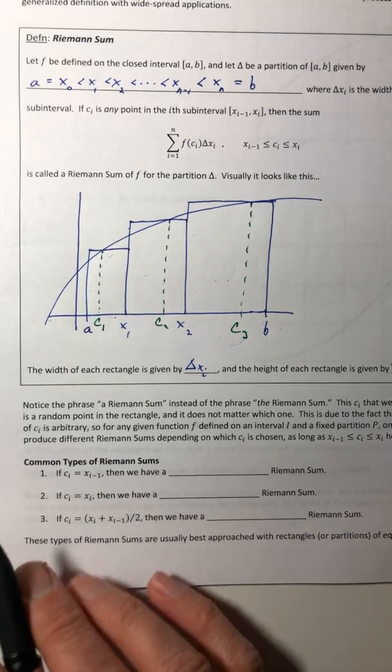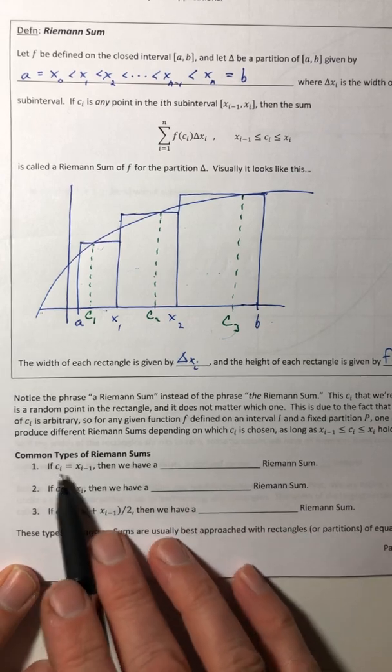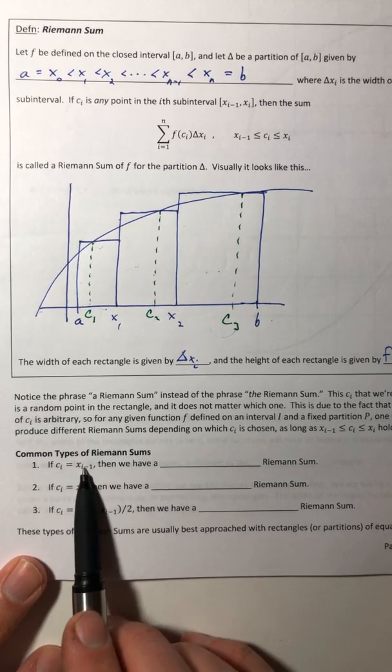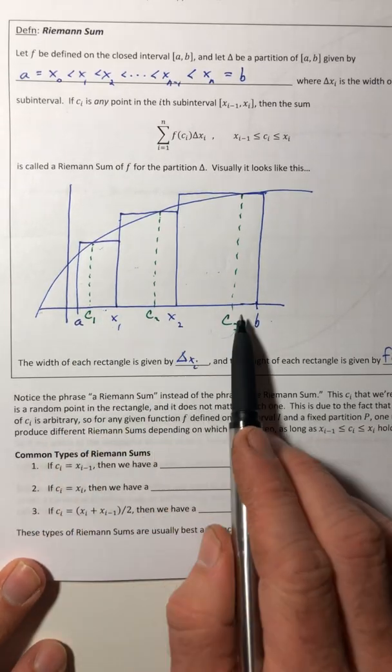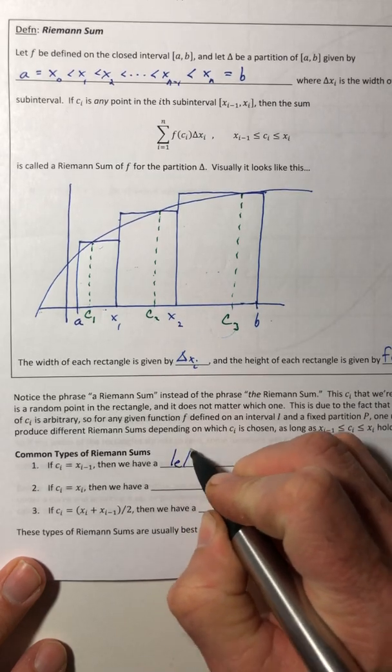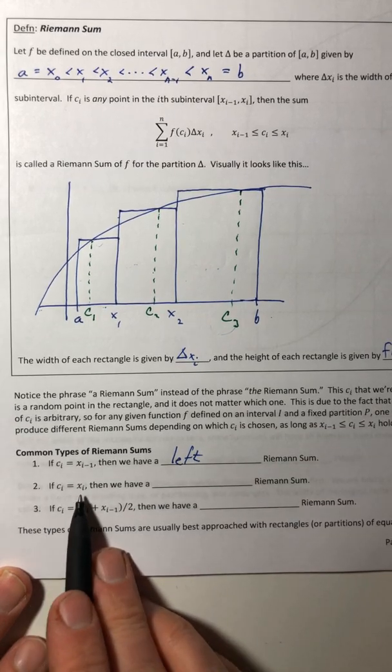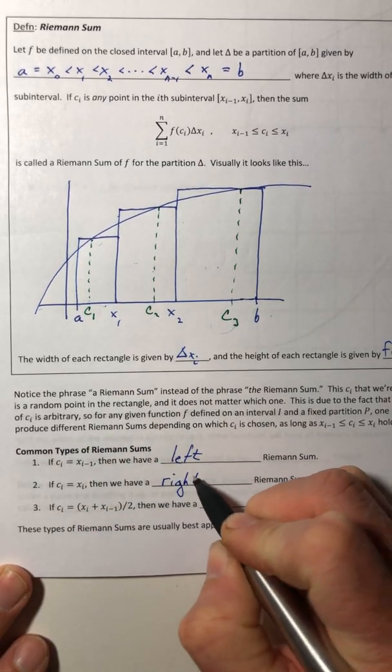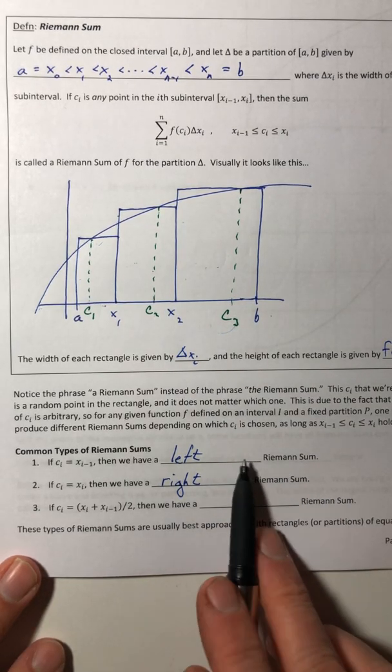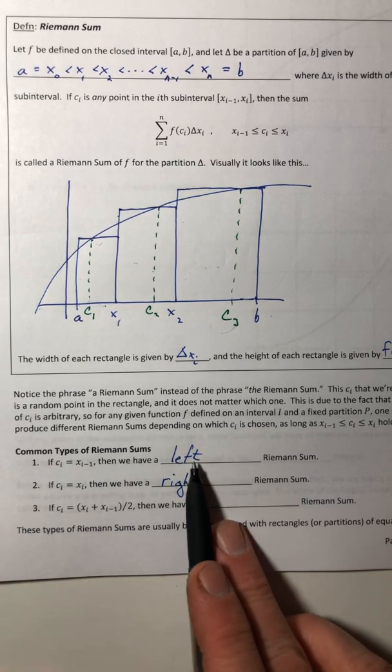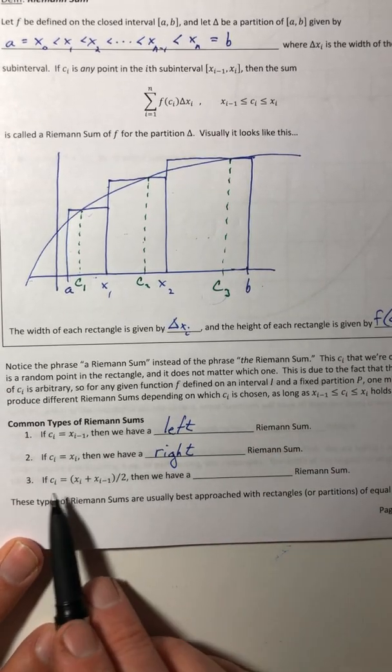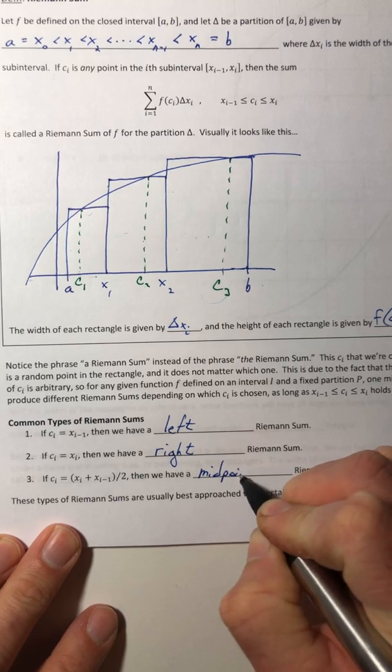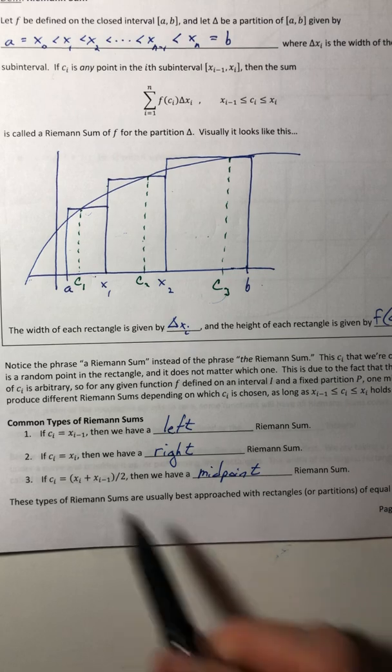Okay, so to keep it kind of more simple we're going to just look at common types of Riemann sums and we're going to stick pretty much with these three for the class. So if your Ci is equal to x sub i minus 1, which means it would be the left side of the rectangle, you have a left Riemann sum. If the Ci equals Xi, so Ci and Xi are the same, then you have a right Riemann sum. And this is really what we did in the previous section. These are representative of your upper and your lower sums. So it's technically left and right. Okay, and now if the Ci is equal to the average of the two x's, then we have a midpoint Riemann sum.